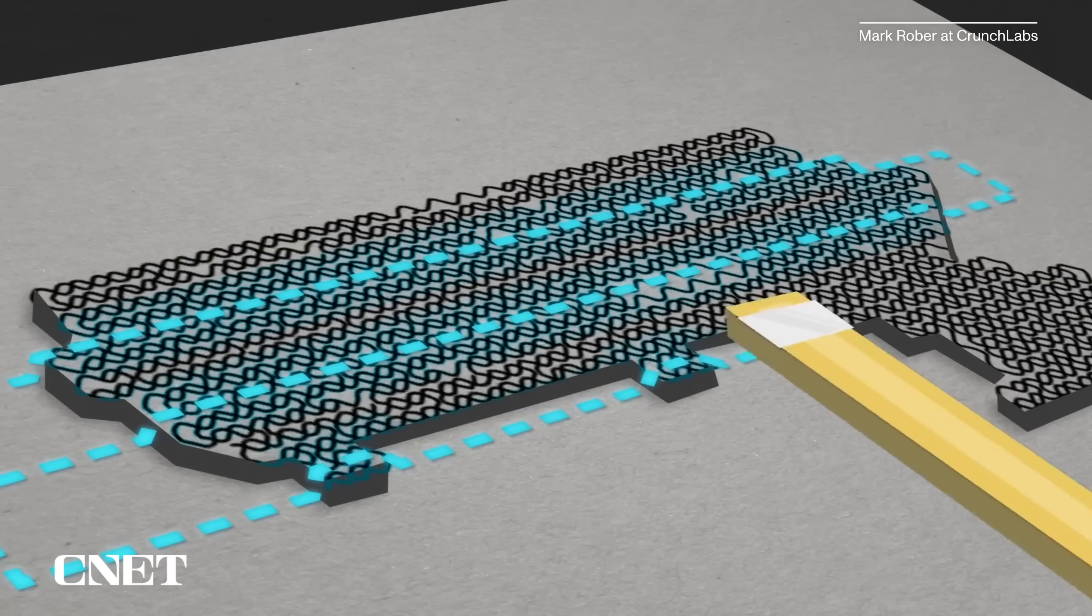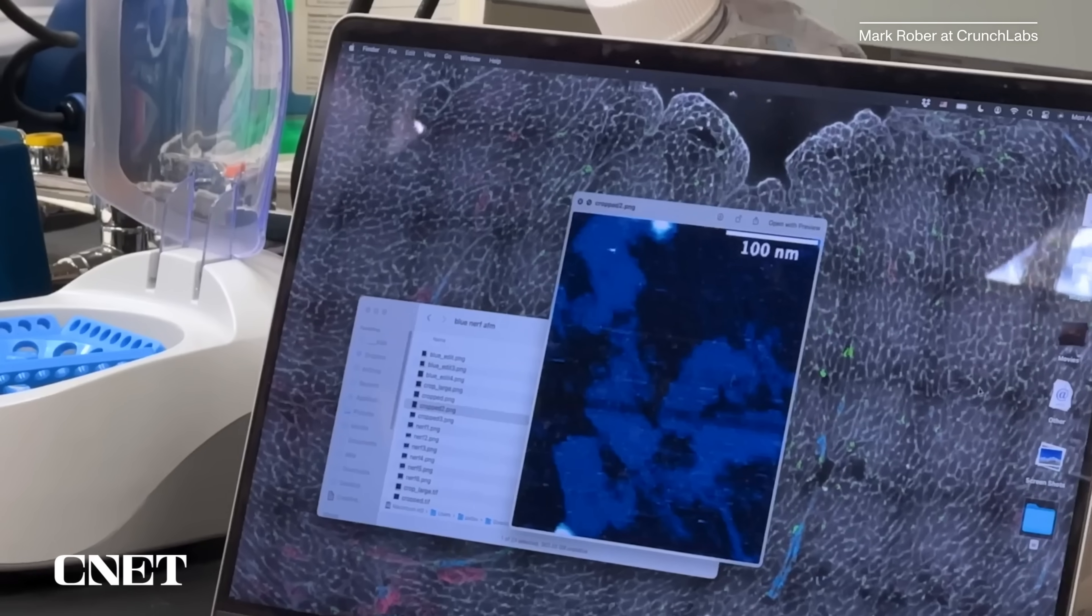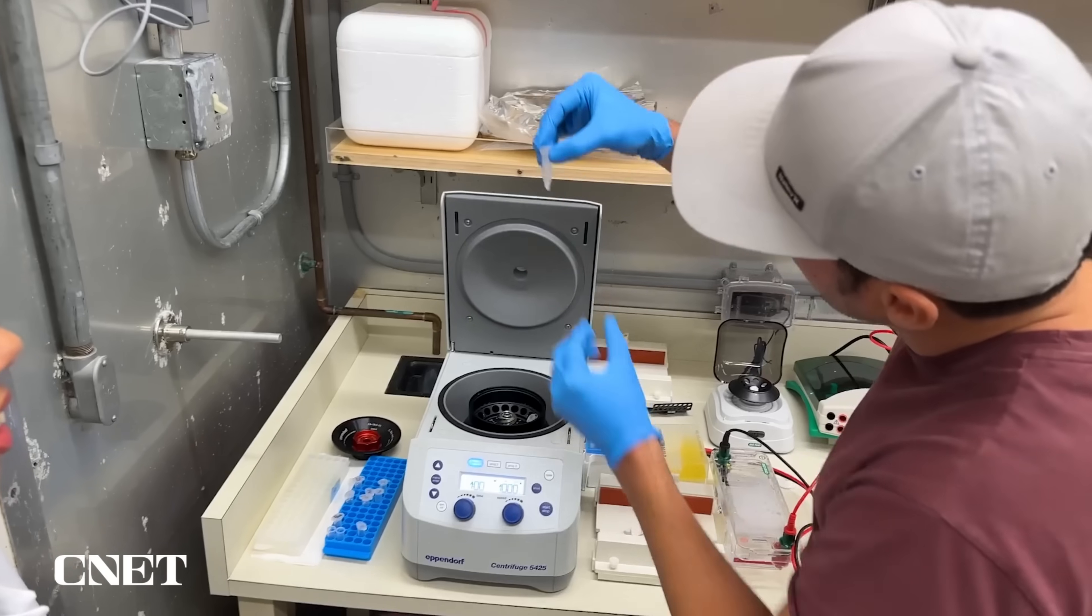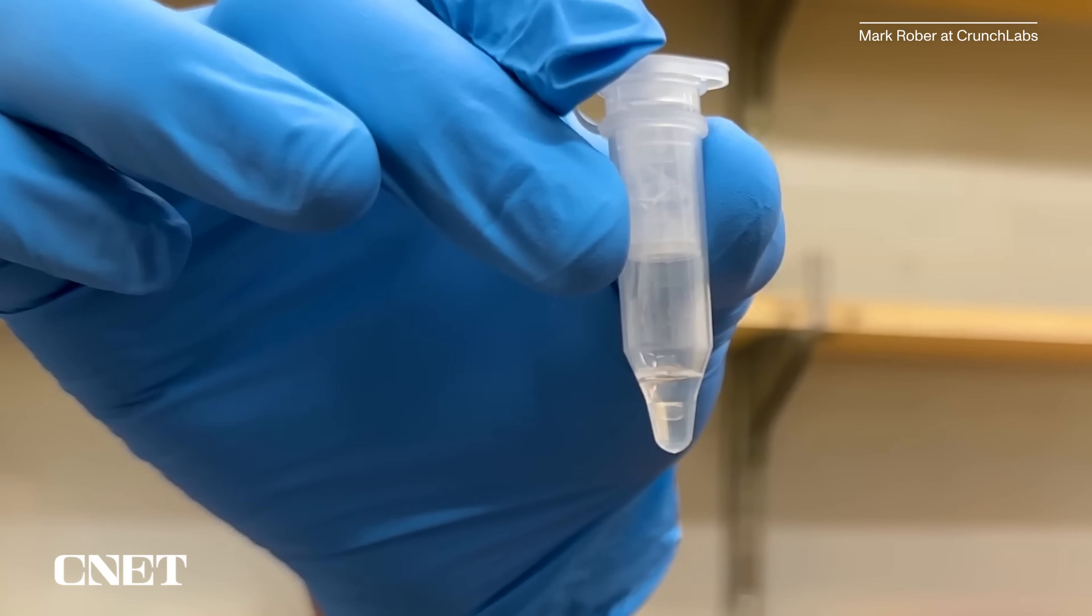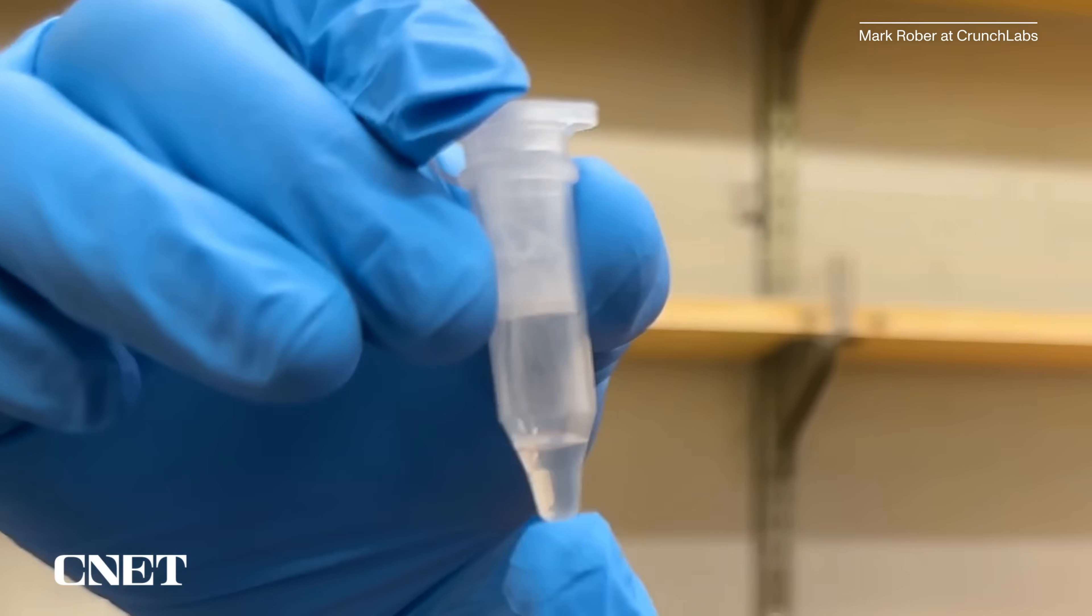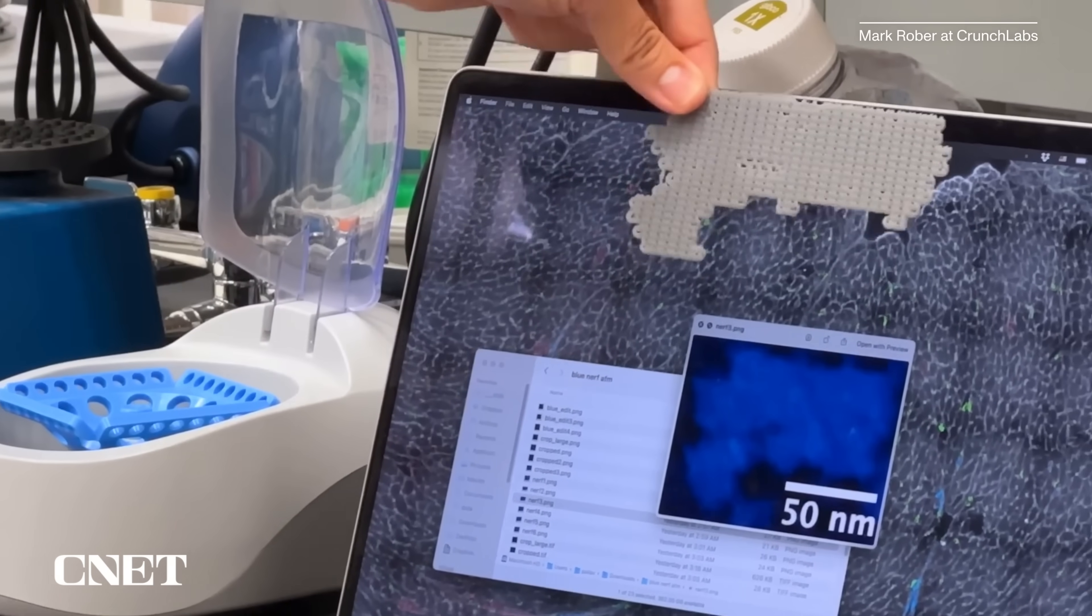Sure enough, when we did it, we saw in a single drop of saline solution, there was 1.2 trillion of the world's smallest Nerf guns. There are now more of the world's smallest Nerf guns than there ever have, or ever will be, actual Nerf guns in a single drop.